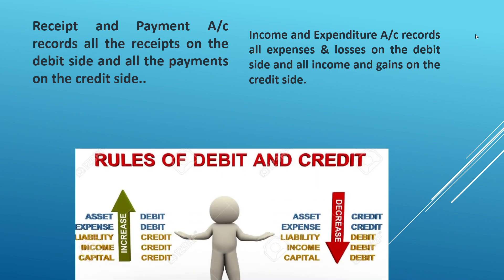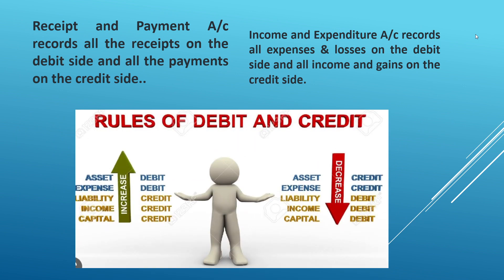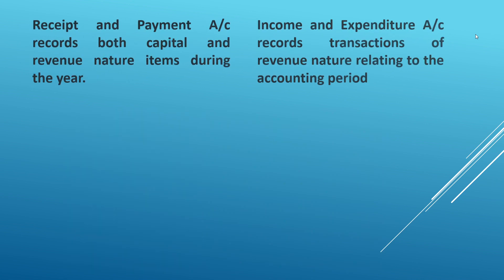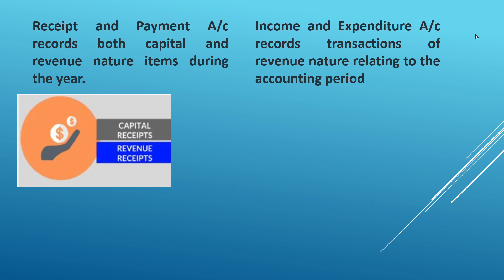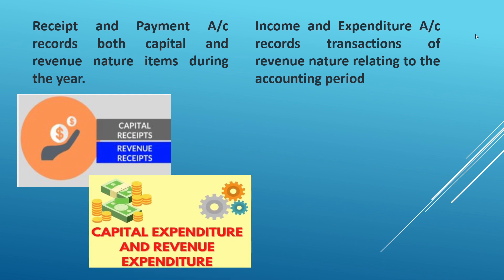Receipt and payment account records all receipts on the debit side and all payments on the credit side. Income and expenditure account records all expenses and losses on the debit side and all income and gains on the credit side. Receipt and payment account records both capital and revenue nature items during the year, whereas income and expenditure account records only transactions of a revenue nature relating to the accounting period.